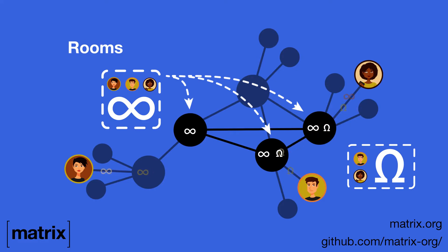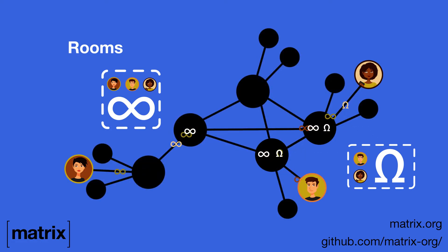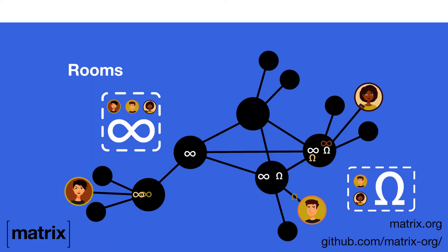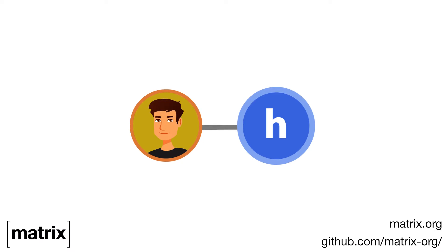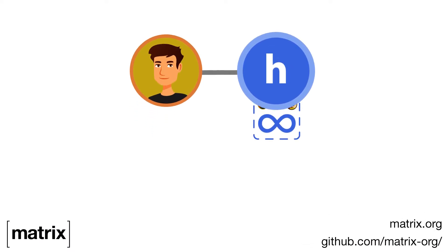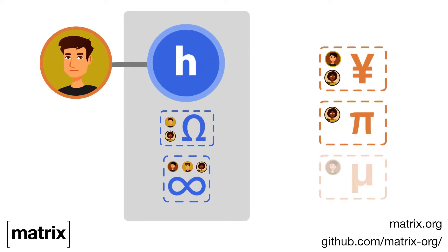There is no single main server, and the room doesn't belong to any one server. It belongs to multiple servers, and it does not go away even if one of the servers is temporarily unavailable. For example, if you run or even write your own server, it will exchange and persist the data for all the rooms your users are in, but not for any other rooms.